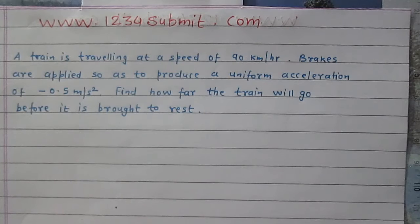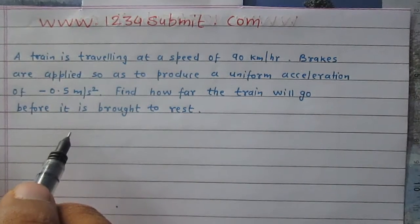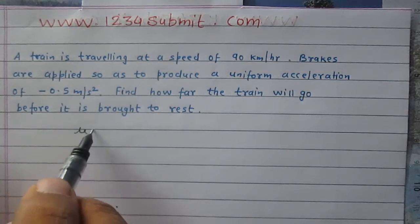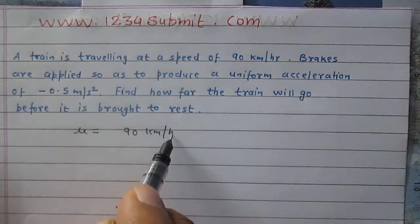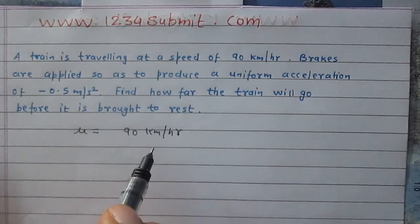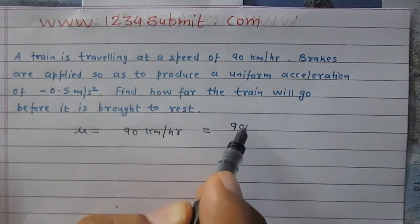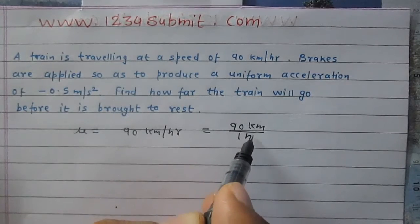First of all, we will make the list of variables. The initial velocity of the train is 90 km per hour. Initial velocity u is 90 km per hour. You can consider it as 90 km in 1 hour.